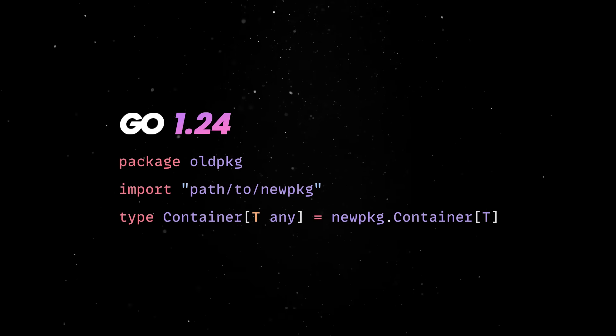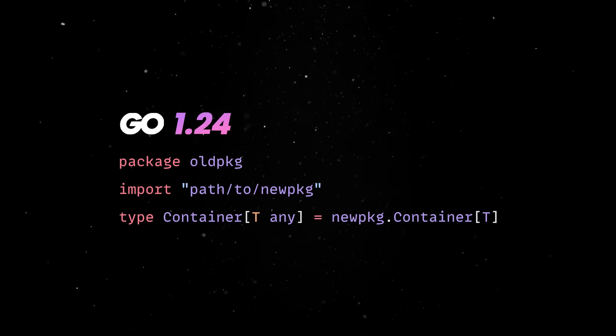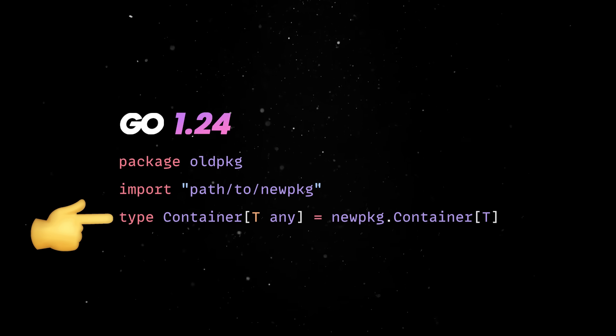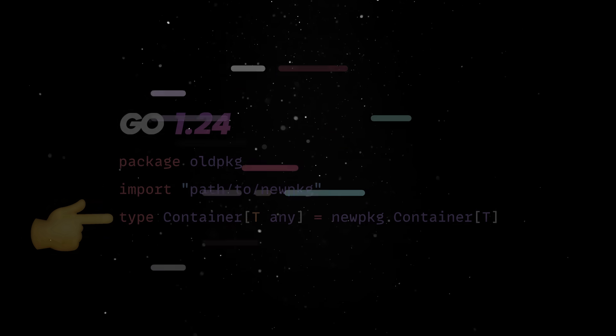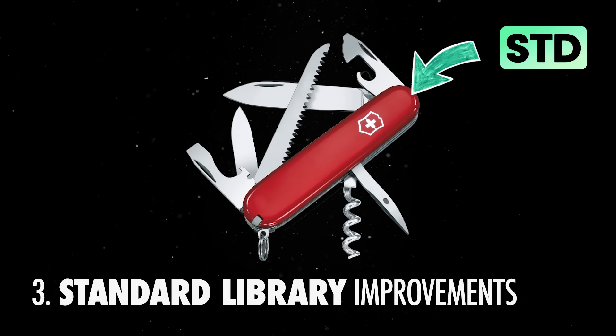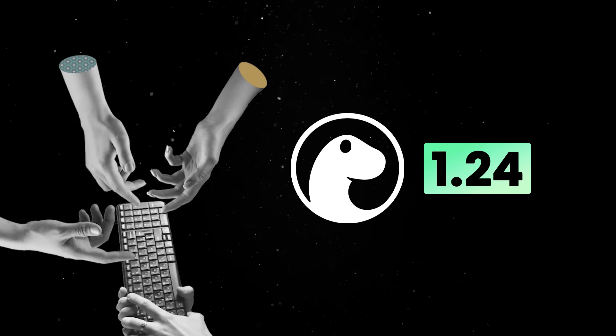Now, with Go 1.24, generic-type aliases make working with generics even cleaner and more ergonomic. This feature allows developers to define aliases for generic types, reducing redundancy and making large codebases easier to maintain. The Go standard library is also famous for its stability and practicality, and this new release continues the tradition with several useful additions and optimizations.